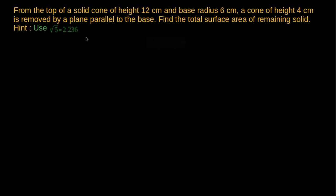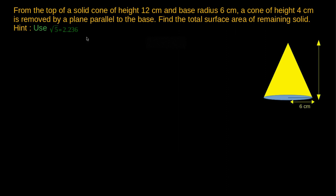Here, the remaining solid is known as frustum of the cone. Consider the given solid cone with circular base of radius 6 cm and height 12 cm. Now, from the given solid, let us remove a cone of height 4 cm parallel to the base.